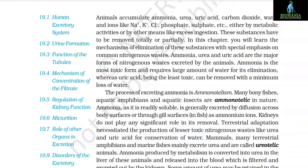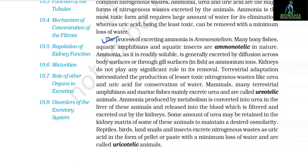Ammonia, urea, and uric acid are the major forms of nitrogenous waste excreted by animals. Ammonia is the most toxic form and requires a large amount of water for its elimination, whereas uric acid, being the least toxic, can be removed with a minimum loss of water. The process of excreting ammonia is called ammonotelism.